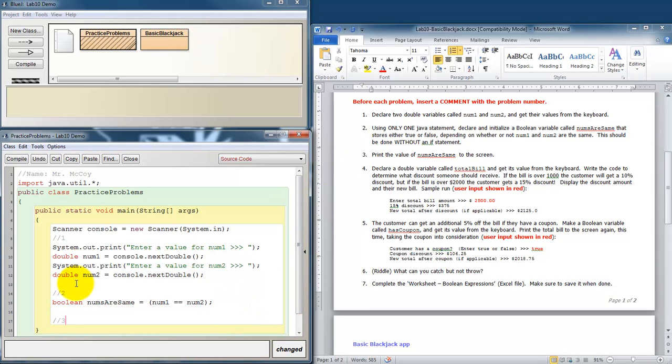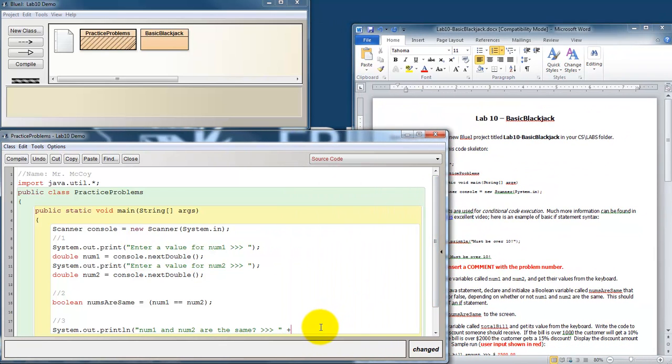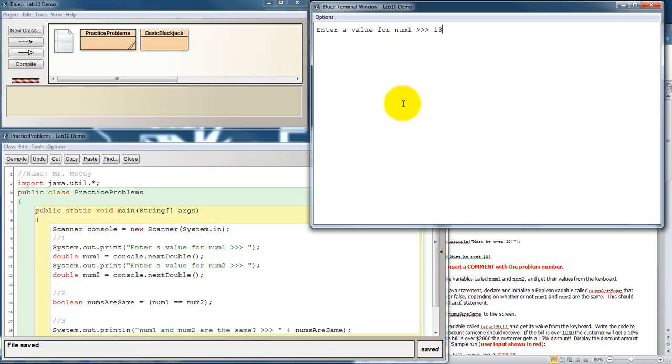And then just to test it out, I'll go ahead and do problem 3 also where it says to print to the screen. It says to print to the screen the value of nums are same. So, let's put in a message here. num1 and num2 are the same? Let me expand this so you can see what I'm typing. I'm going to concatenate. You can concatenate with Booleans. So, check this out. So, I'm going to concatenate on nums are same. And let's take a look. Compile. It's happy. Let's run it. Okay, let's put in 13 and 13. num1 and num2 are the same? True. Awesome. Let's run it again. Let's try 13 and 14. num1 and num2 are the same? False. Alright, it's working. Alright, hopefully you can knock out the rest of these on your own. Good luck.